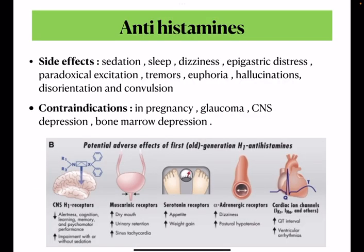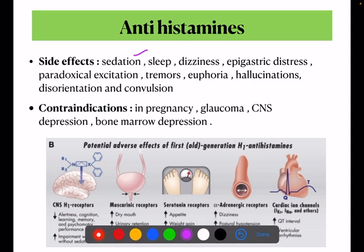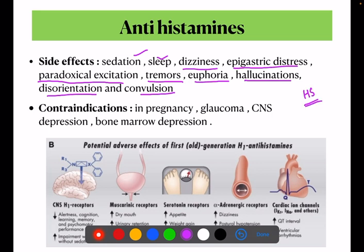What are the side effects? In the first generation, the side effects include sedation, sleep, dizziness, epigastric distress, paradoxical excitation, tremors, euphoria, hallucinations, disorientation, and convulsions in rare cases. In a hospital setting, these drugs are often given at bedtime because the side effects of sleep and sedation are less visible when the patient is sleeping at night.